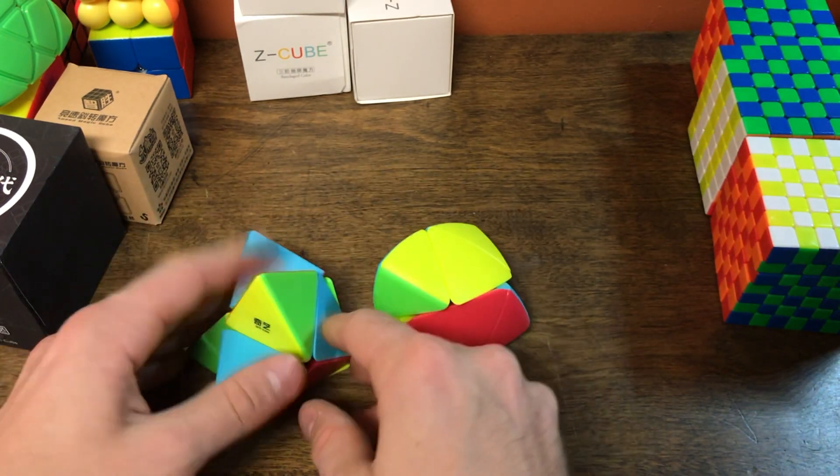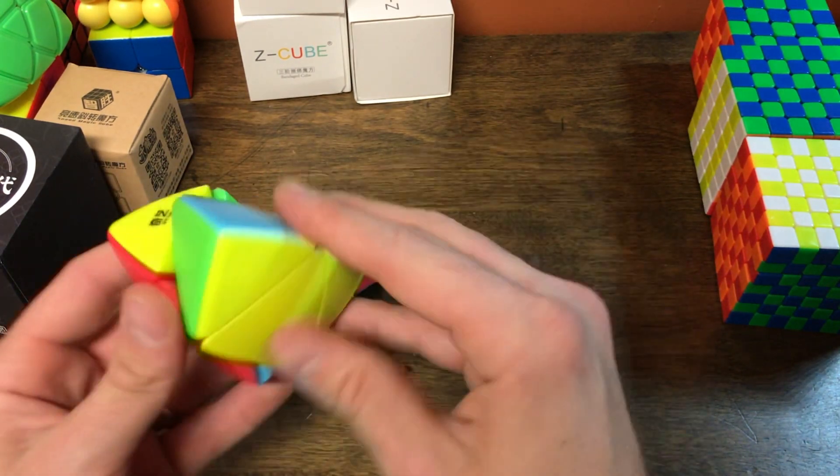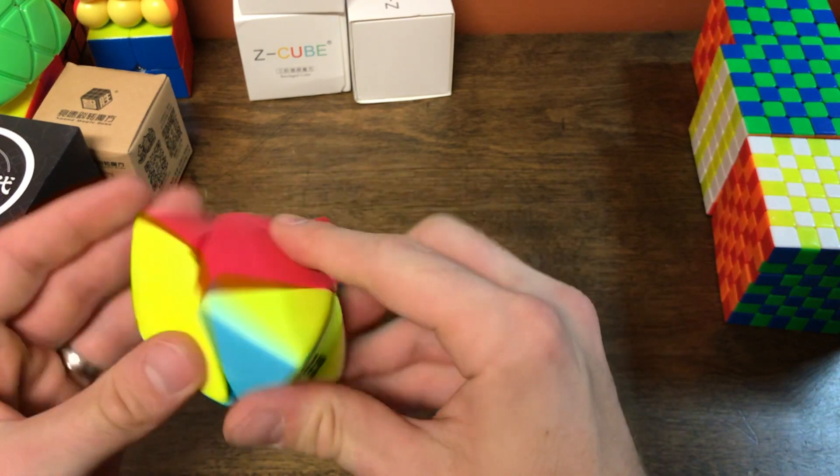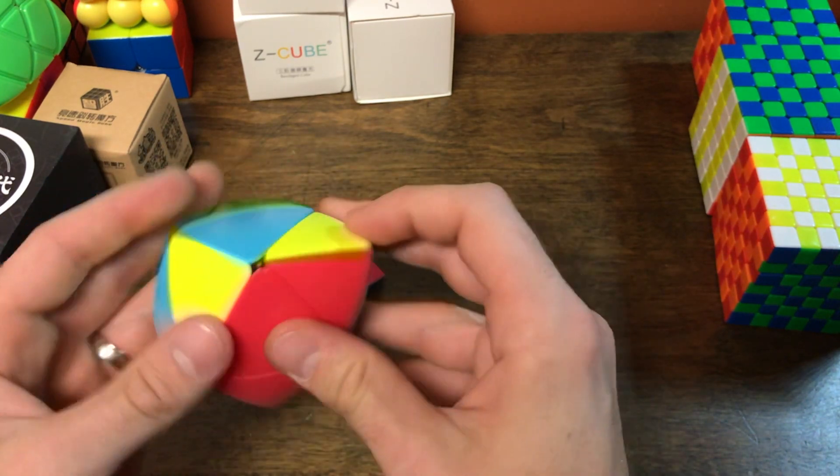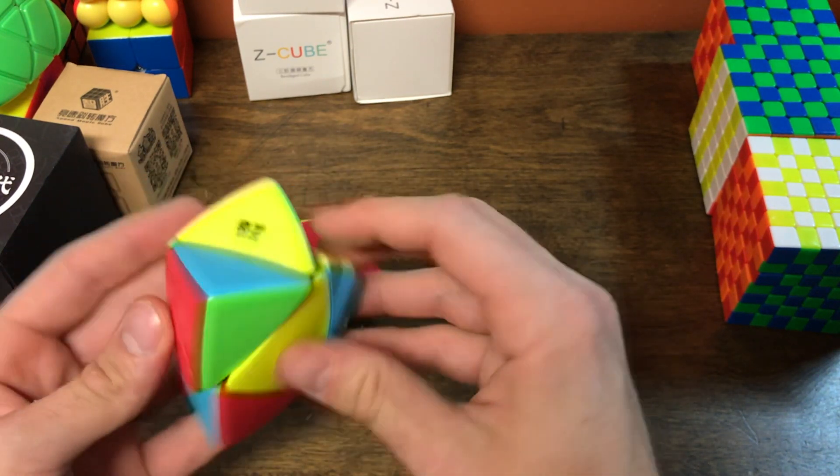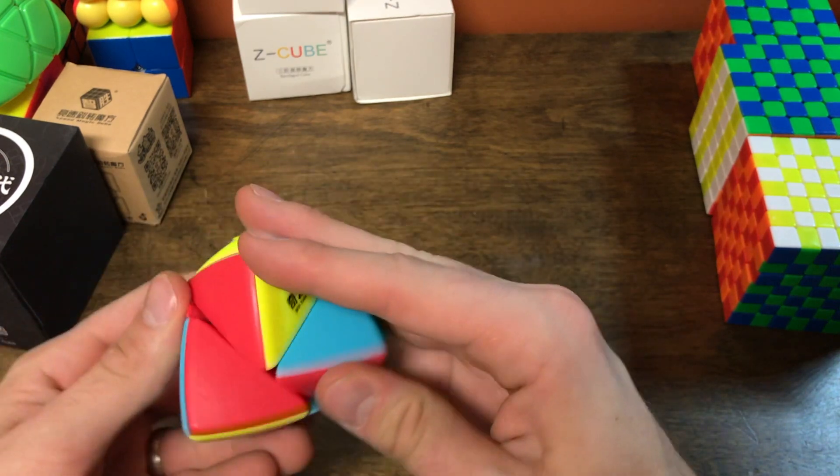This one looks really weird. And then the pillared one. The pillared one's kind of cool. It's a little more subtle. And you solve it just like a 2x2.